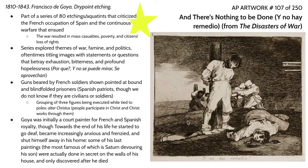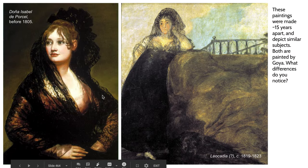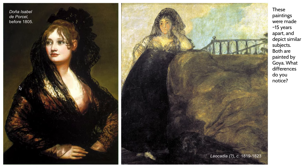This piece was created using dry point etching — it is a print made by incising a piece of metal with a stylus, rubbing ink into the grooves, and then printing the image onto a sheet of wet paper. This printmaking method was also used by Rembrandt. When comparing Goya's court paintings versus his later works, you see this kind of dissociation being physically represented.